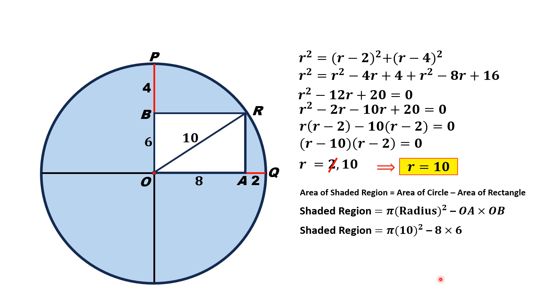The area of the shaded region will be πr² - (OA × OB) = 100π - 48, which is approximately equal to 266.159 square units. That is the answer.